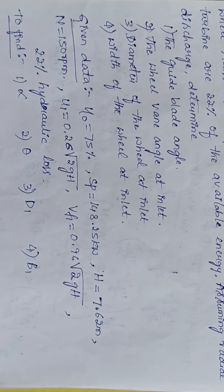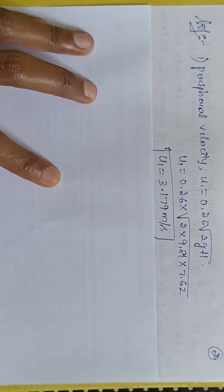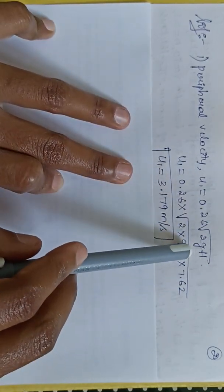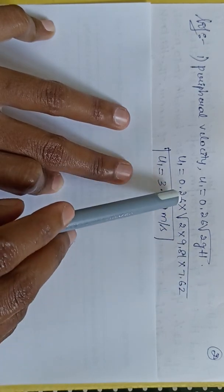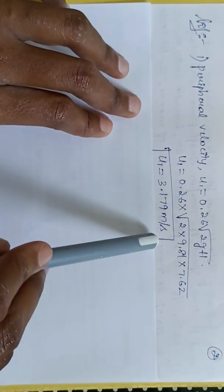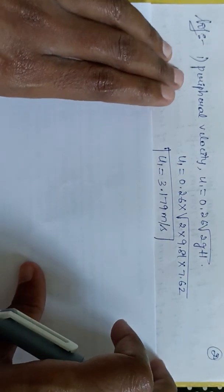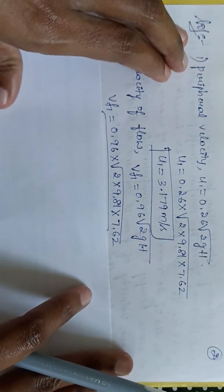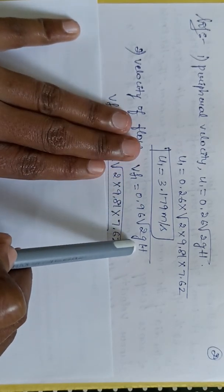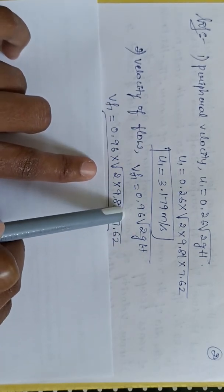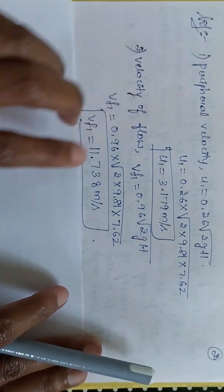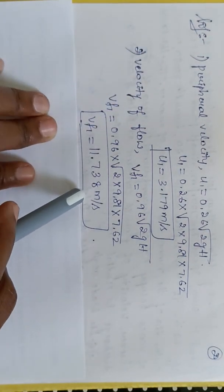Let us first find the peripheral velocity u1, given by 0.26 times the square root of 2gH. Substituting H = 7.62 m and g = 9.81 m/s², we get u1 = 3.179 m/s. Similarly, the velocity of flow at inlet Vf1 = 0.96 × √(2gH) = 11.738 m/s.